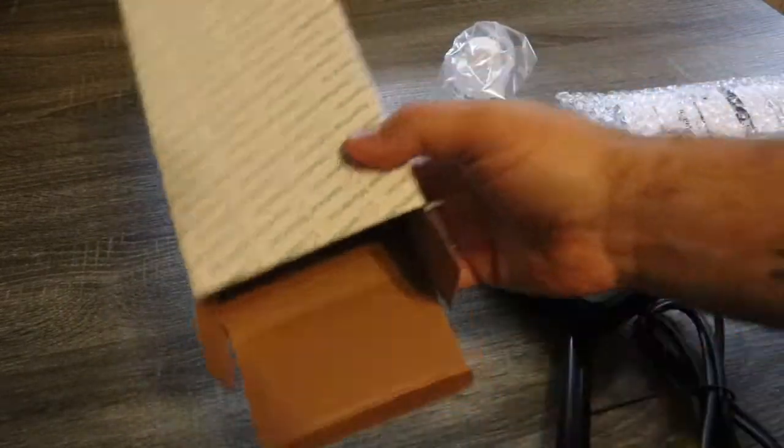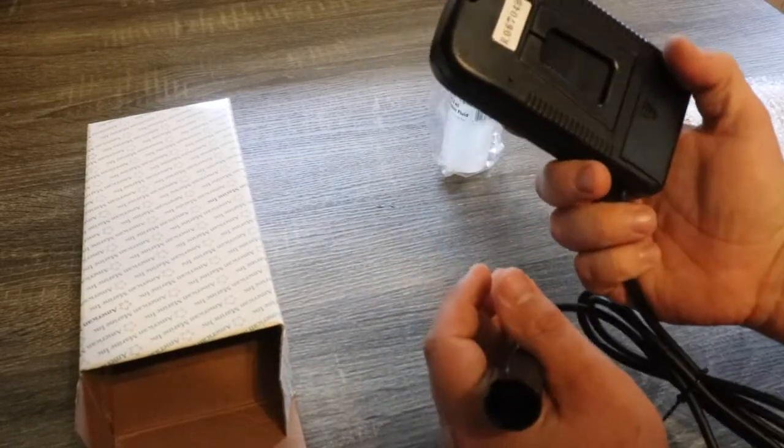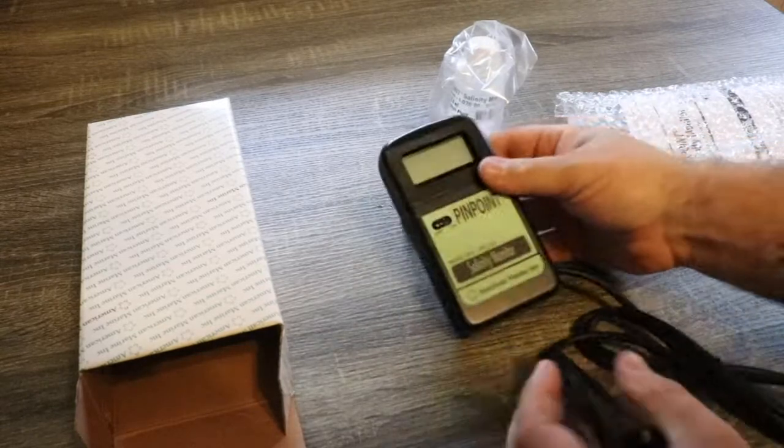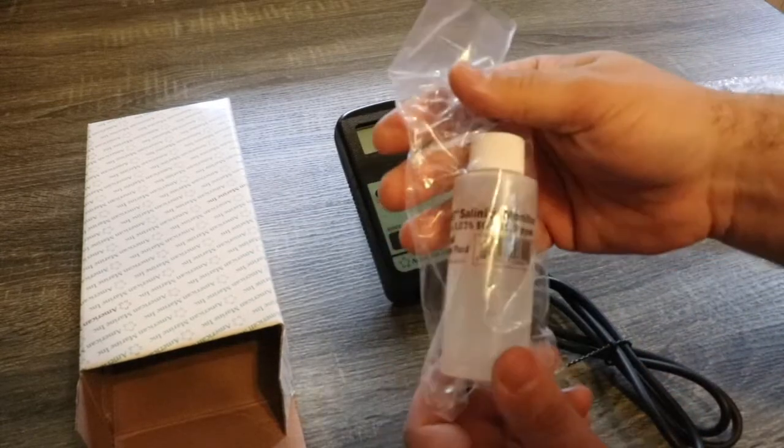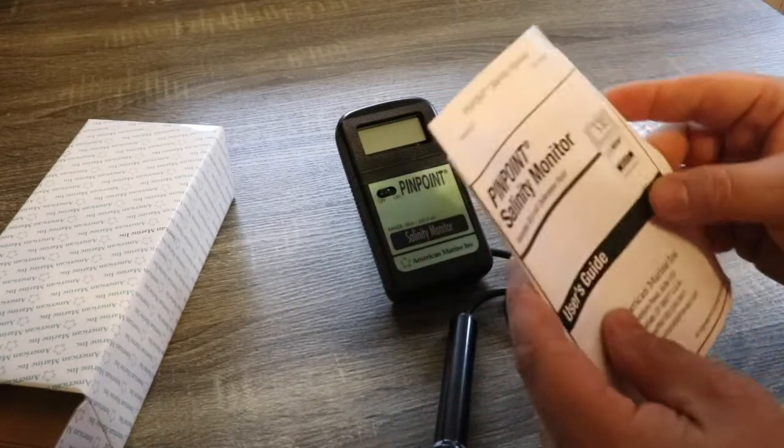All right, so that was all that was in the box. We have the probe and the monitor itself, a little bit of a stand that's cool, and then we have some salinity calibration fluid and our user's guide.